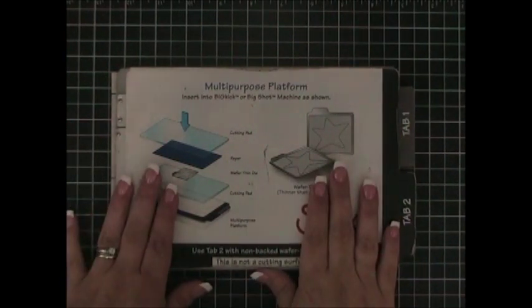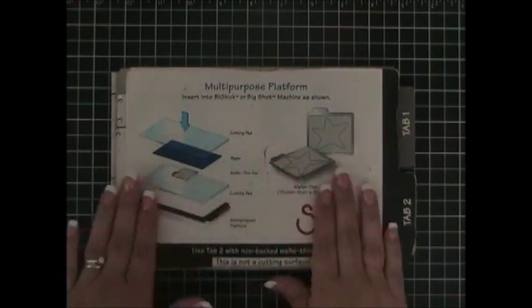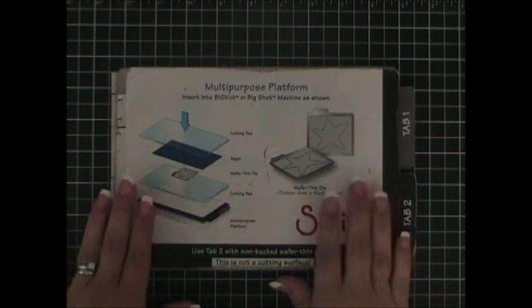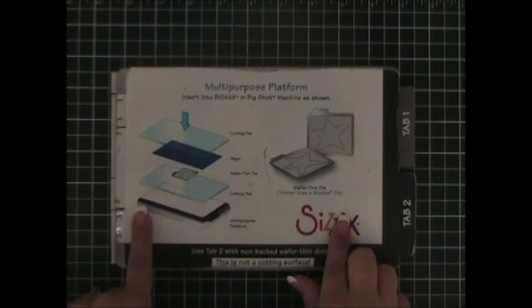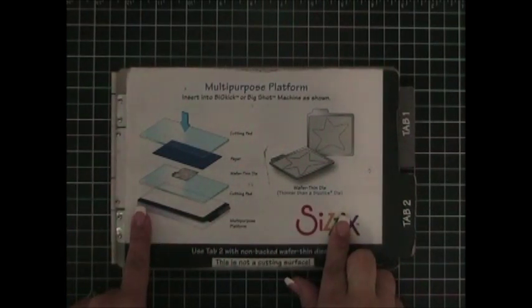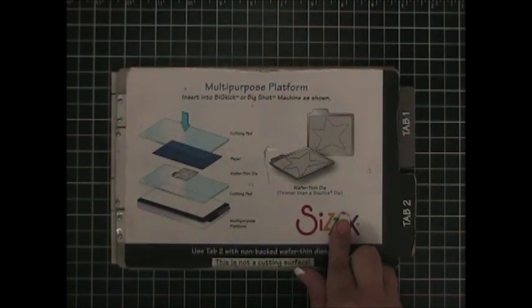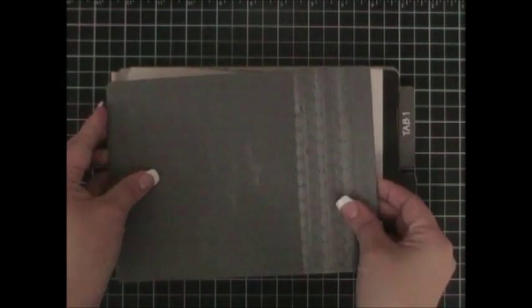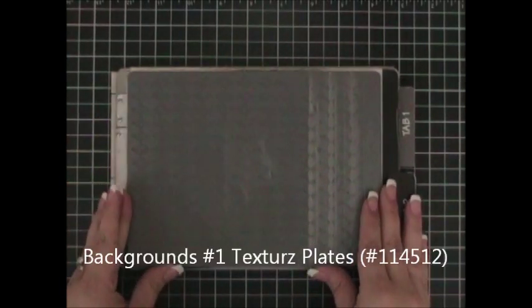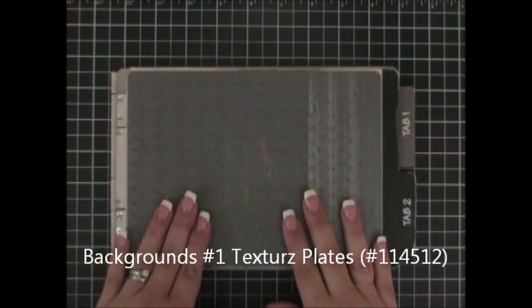To emboss the metal piece, I am going to need to start off by using my multipurpose platform. As you will notice, it is completely closed. So what I am going to do now is that I am going to take my textured plate, my argyle textured plate, and I am going to place it on top of my closed multipurpose platform.